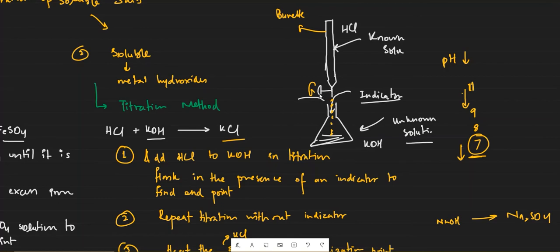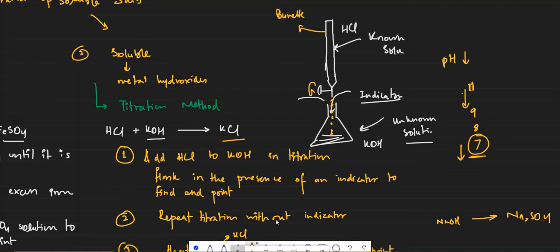Poor titration results come from opening the tap too much, allowing a large volume of HCl to enter at once — this can cause pH to drop drastically and you miss the endpoint. Always let HCl trickle down drop by drop. The best readings are those with the least volume of HCl used. Repeat titration to shortlist the most consistent readings.